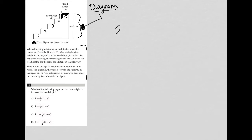So we have 2H plus D equals 25, where H is the riser height. So just making sure I remember that. And D is the tread depth.